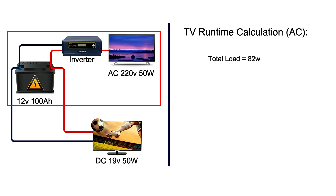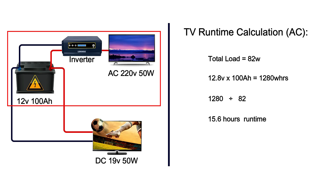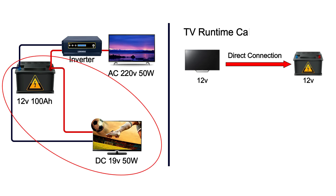So we now divide our battery energy rating by the total power load to get the runtime. Our battery energy is calculated by multiplying its nominal voltage of 3.8 volts by its capacity of 100 ampere-hours, giving us 1,280 watt-hours. Dividing 1,280 watt-hours by 82 watts of load gives us 15.6 hours of runtime for the AC TV scenario.